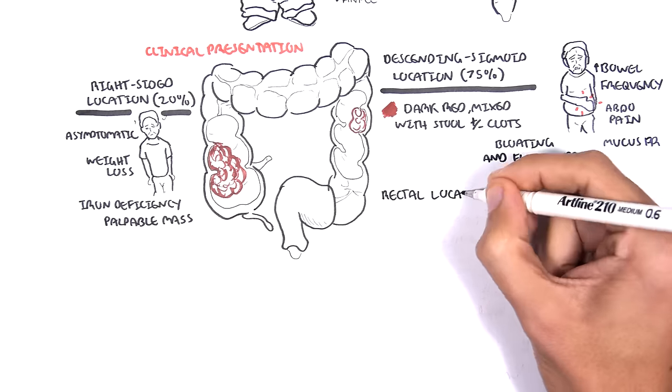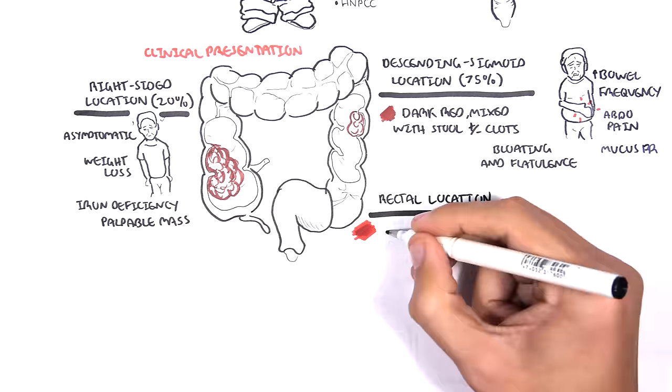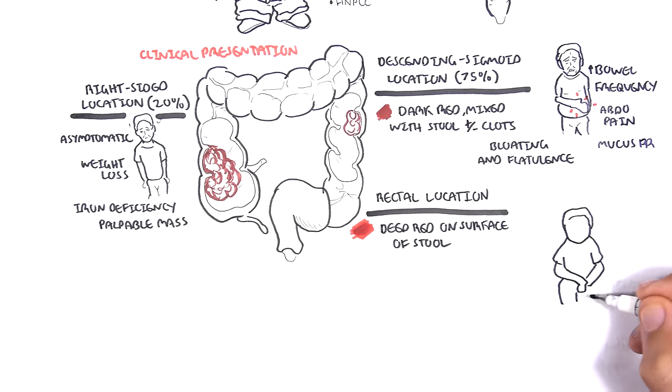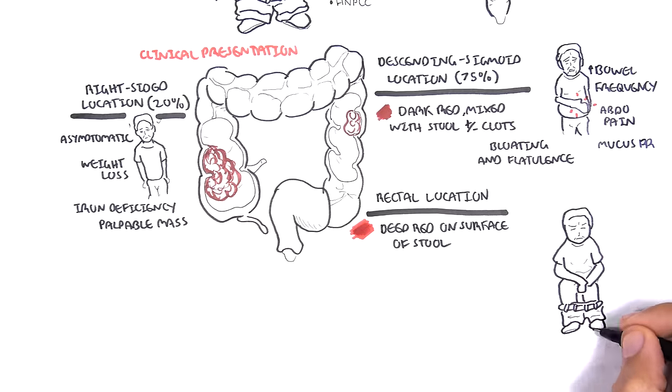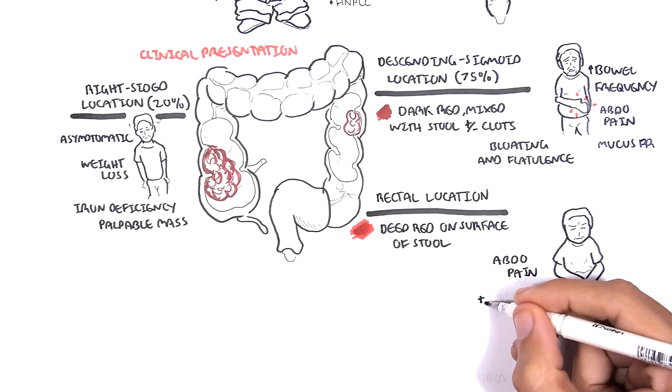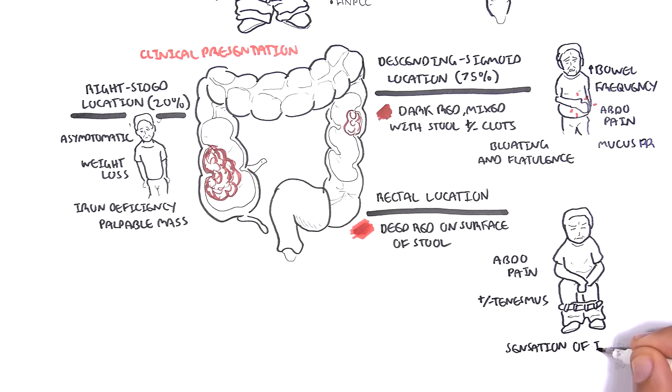Tumors occurring in the rectal regions can present with deep red blood on the surface of the stool. People can also have abdominal pain, plus minus tenesmus. You can imagine a growth in the rectum would cause sensation of incomplete bowel evacuation.